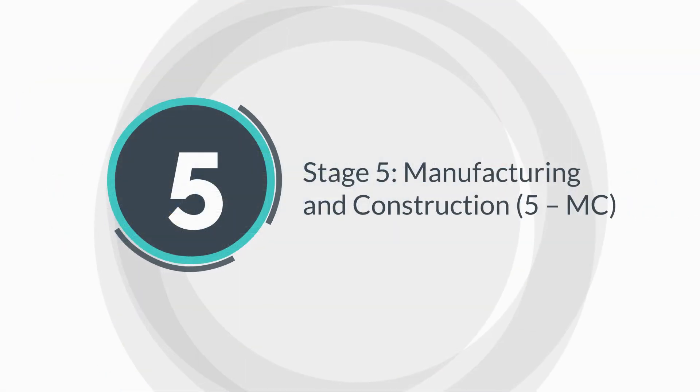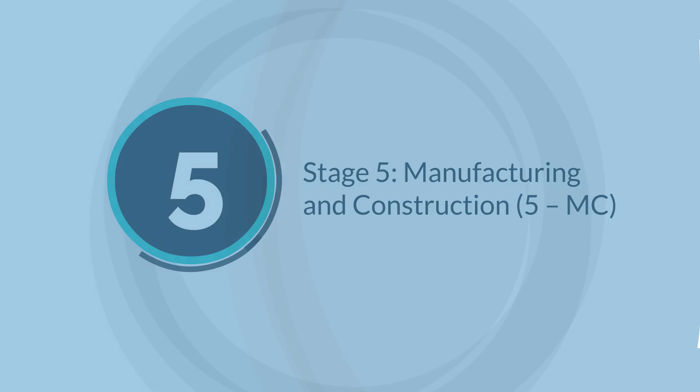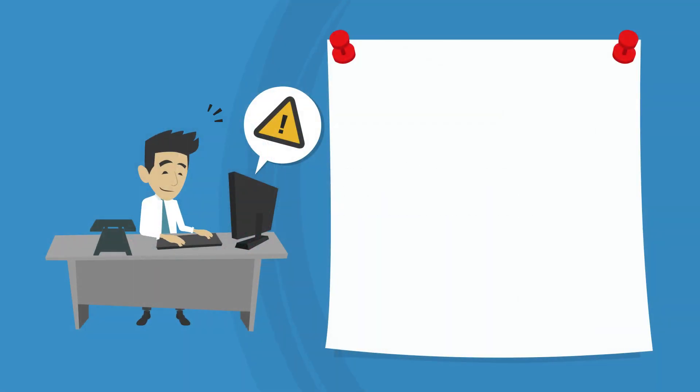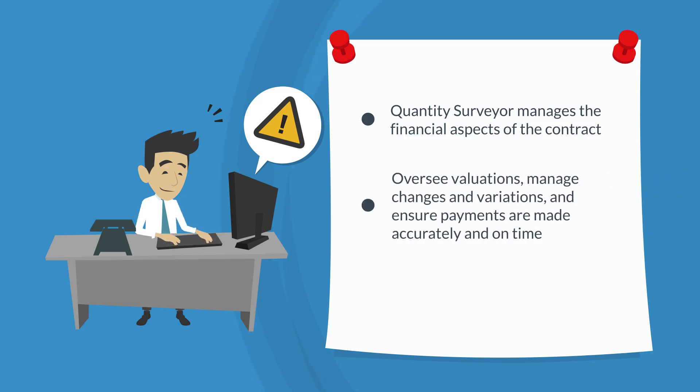Stage 5, Manufacturing and Construction. In the Manufacturing and Construction phase, the Quantity Surveyor manages the financial aspects of the contract. They oversee valuations, manage changes and variations, and ensure payments are made accurately and on time. They also monitor the project's financial health, keeping the client informed of any cost implications.